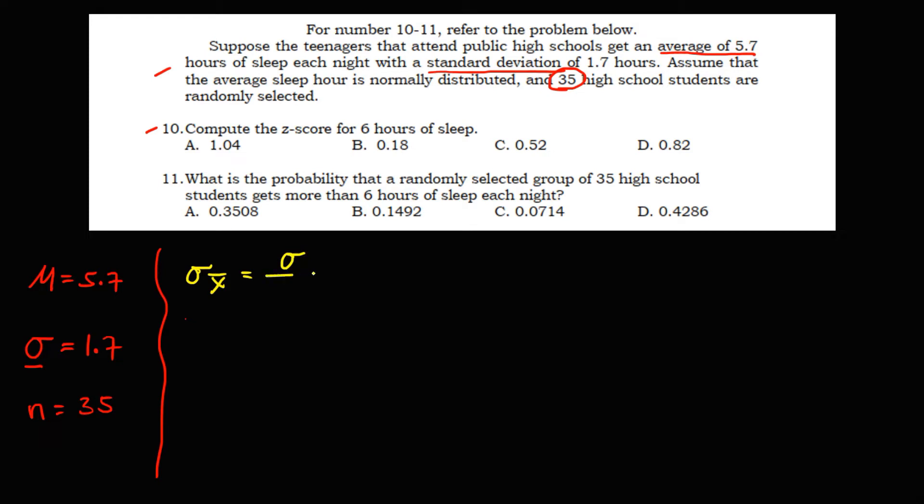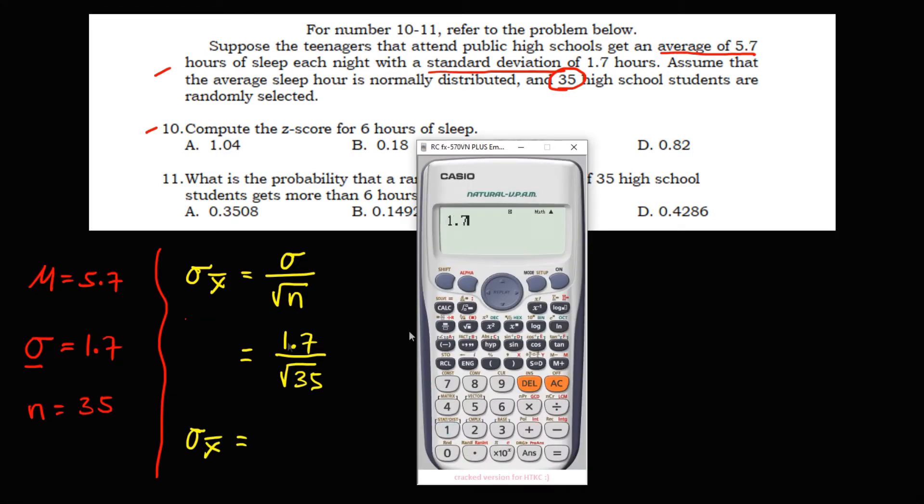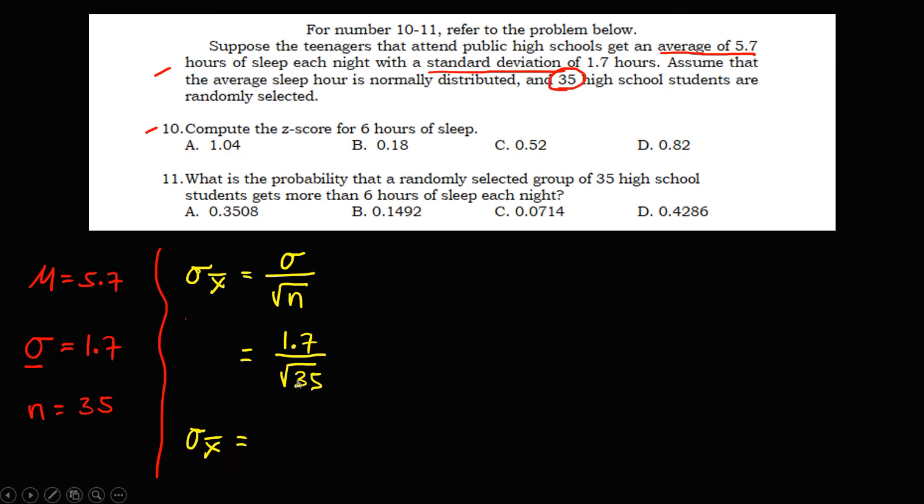That's the population standard deviation over the square root of the sample size. So we have 1.7 over the square root of 35. Therefore, the sample standard deviation is 1.7 divided by square root of 35 equals 0.2874.